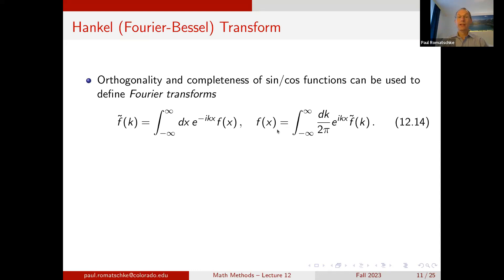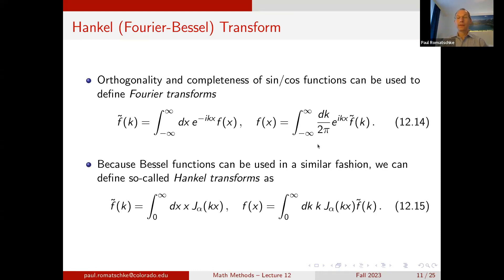Fourier transforms are useful for a variety of reasons — we will encounter them in the lecture on Green's functions. It turns out one can define a similar transformation using Bessel functions: the Hankel transform takes the integral of dx x J_α(kx) f(x) to define f̃(k), and the inverse Hankel transform takes the integral over k to recover f(x).